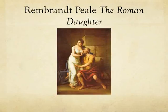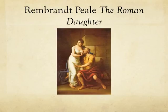This piece by Rembrandt Peale is called The Roman Daughter. It depicts severe filial devotion. The painting displays a woman who has come to her father's aid in a very peculiar way. Her father was unjustly imprisoned, and in order to save him from starvation and jail, she resorts to breastfeeding him. Critics found this image to be extremely offensive because it contained not only nudity but implied incest.